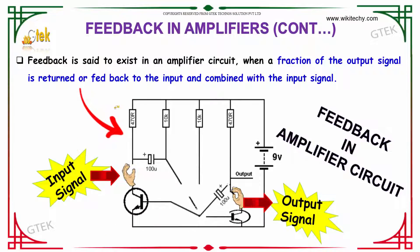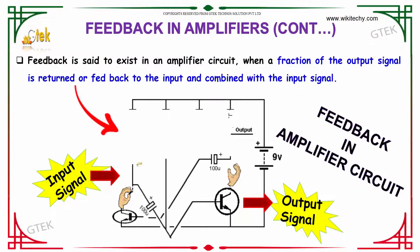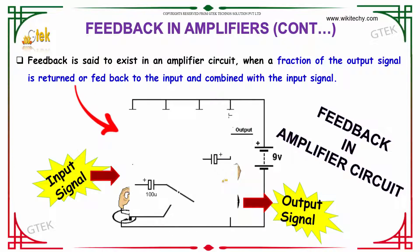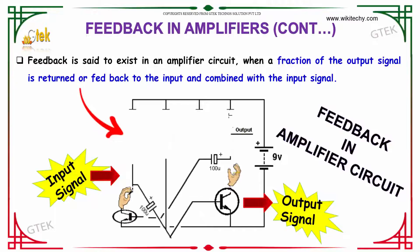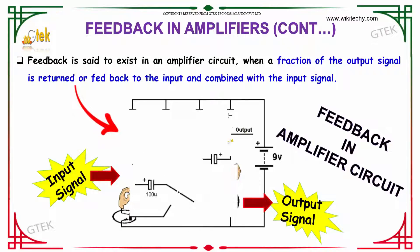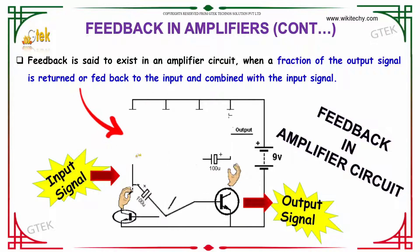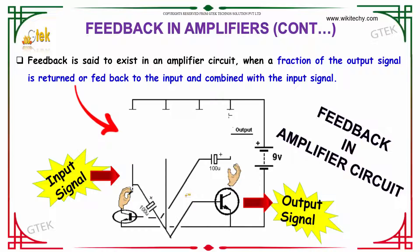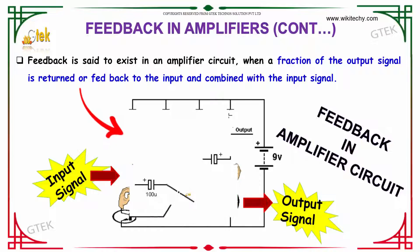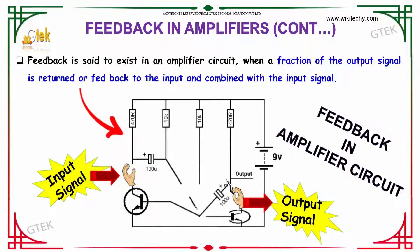Feedback is said to exist in an amplifier circuit when a fraction of the output signal is returned or fed to the input and combined with the input signal. So here is the output, and this output is fed as an input to the amplifier.